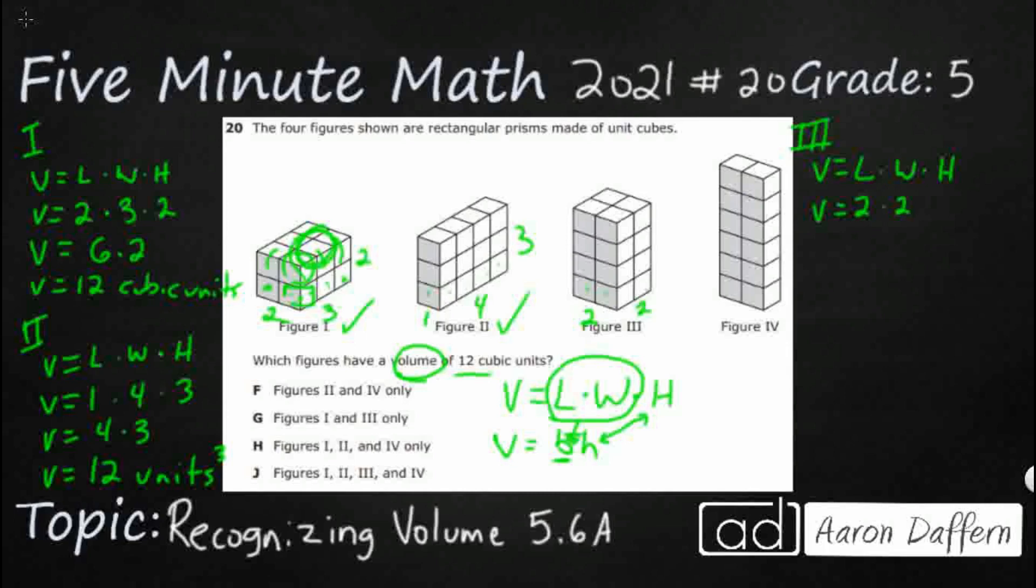What's my height? 1, 2, 3, 4. So 4 times 4, no, that's not going to work. That's going to be 16. And I'm looking for 12. So 16 cubic units. So not figure three.